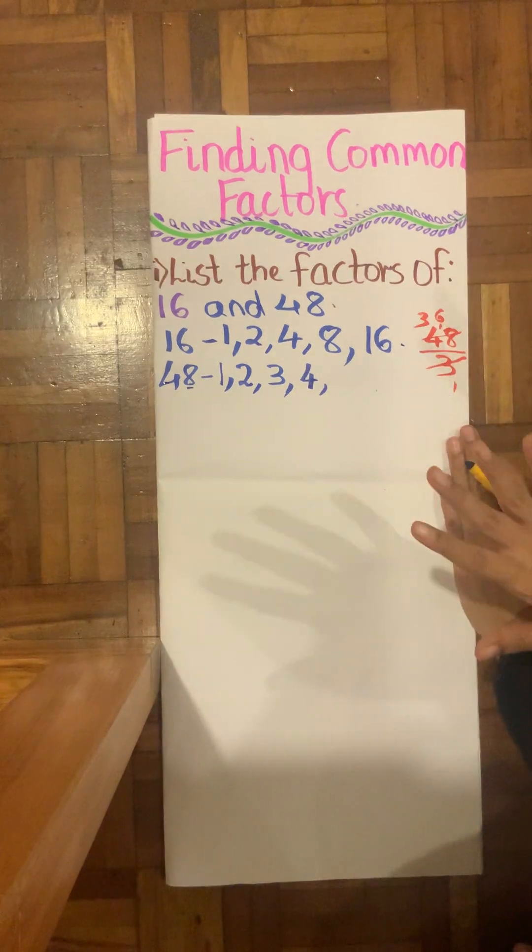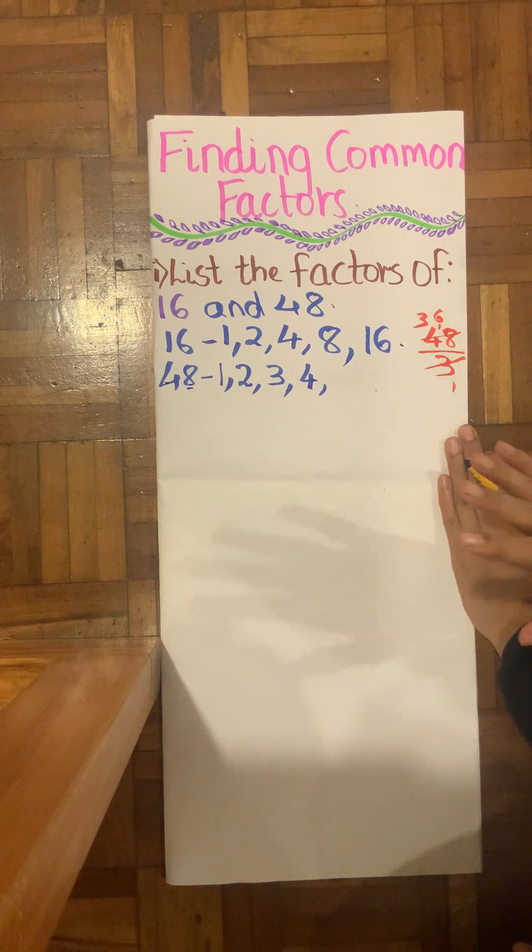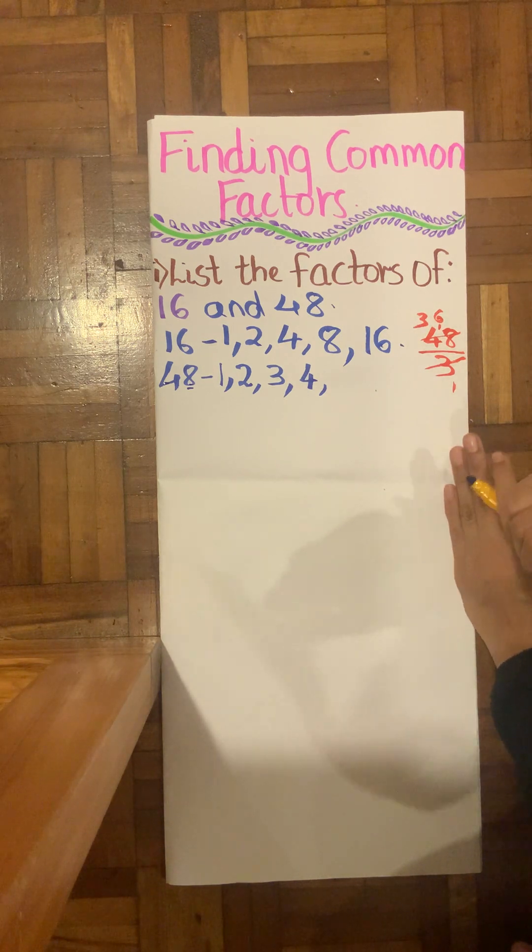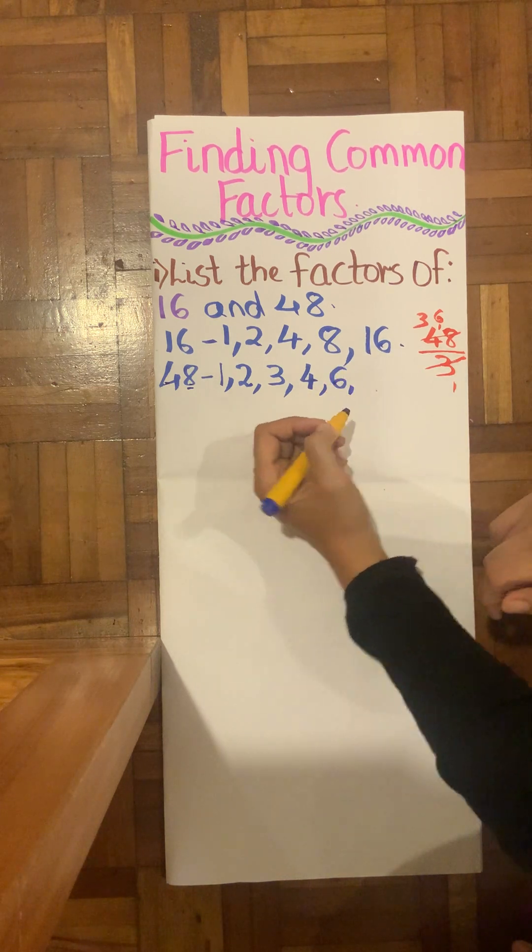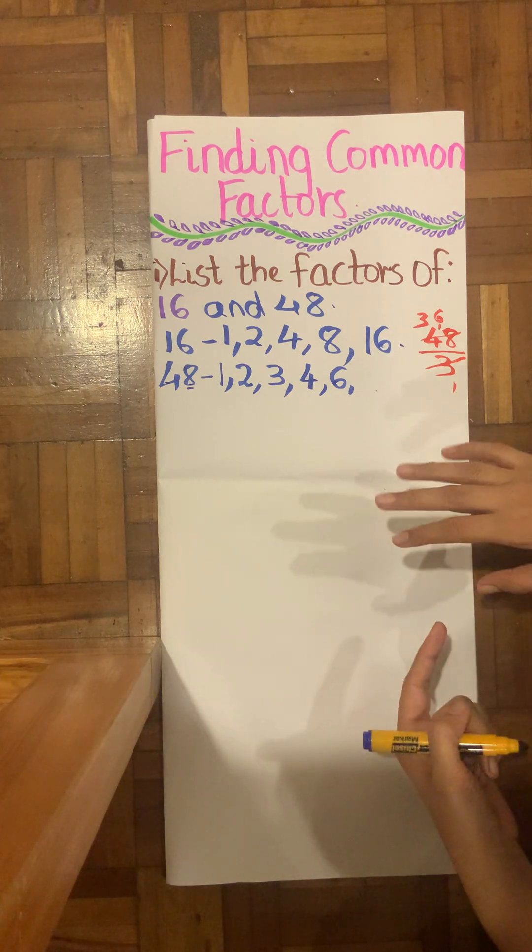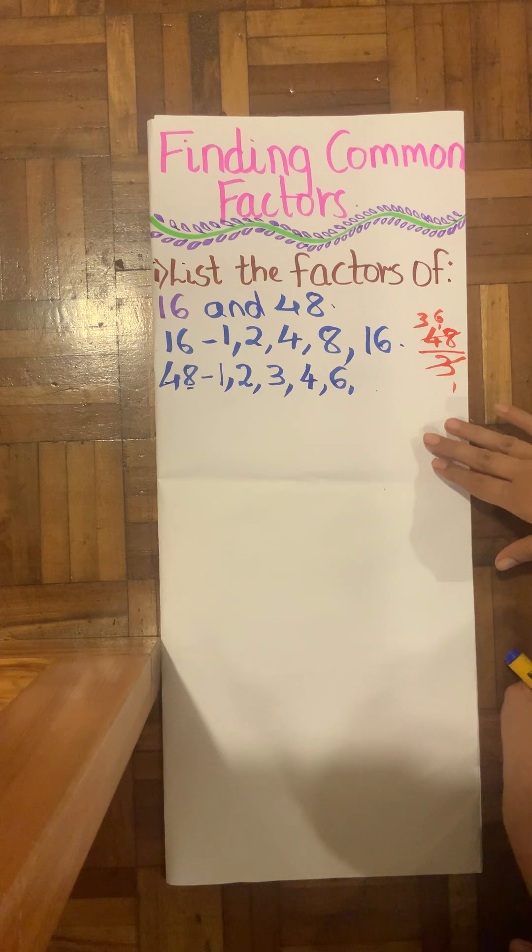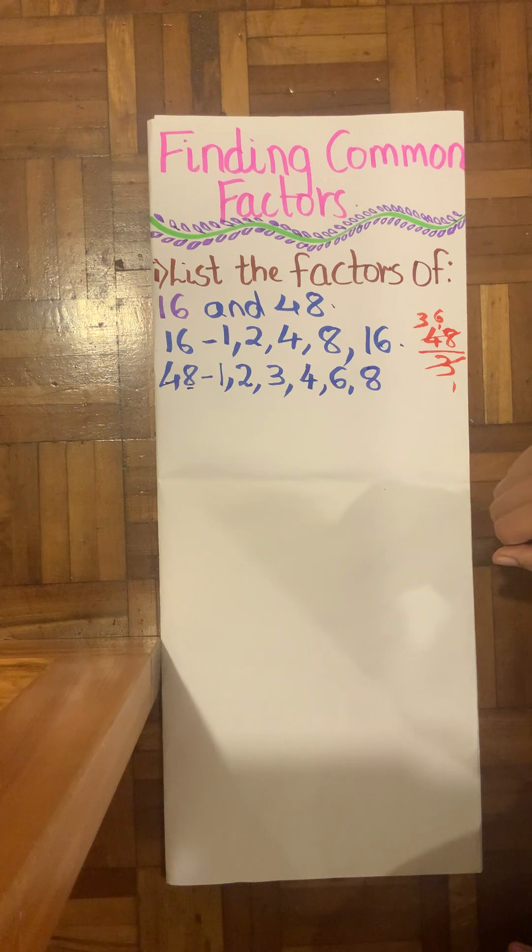Now 6 times table we have 48. Therefore I will write my 6. Then we have my 7 times table. So 7 times table we know 7 times 7 is 49. Therefore we can't have it in 7 times table. 8 times table, 8 times yes, 8 times 6 is 48.